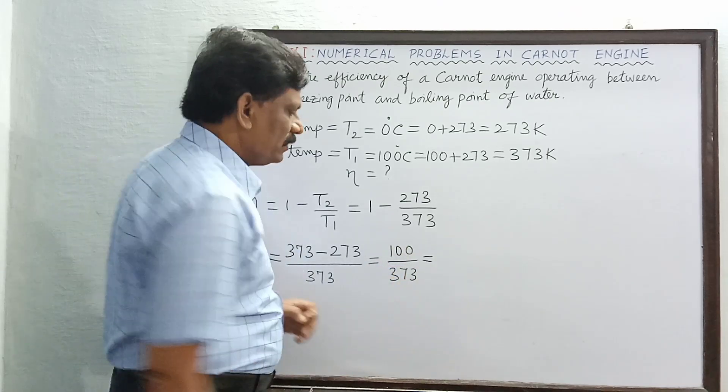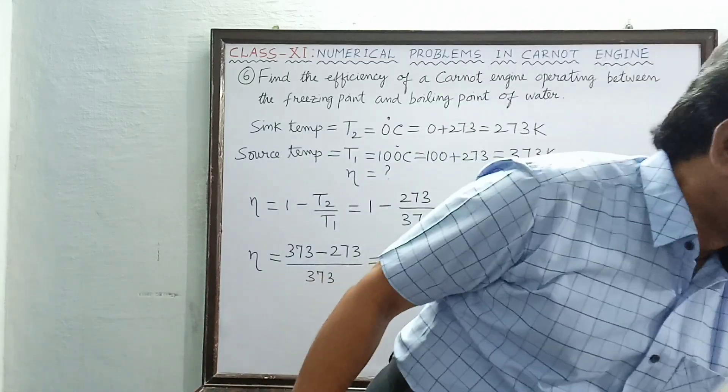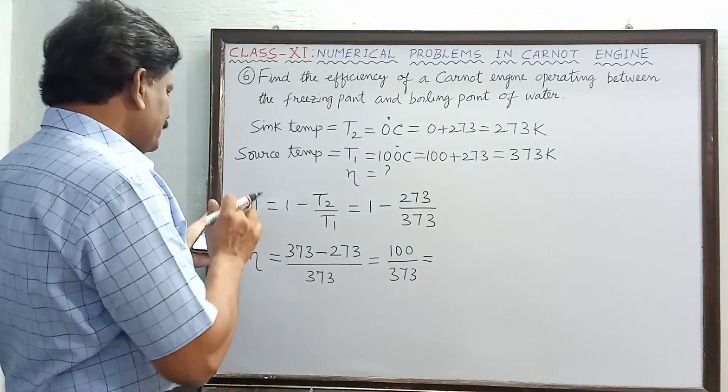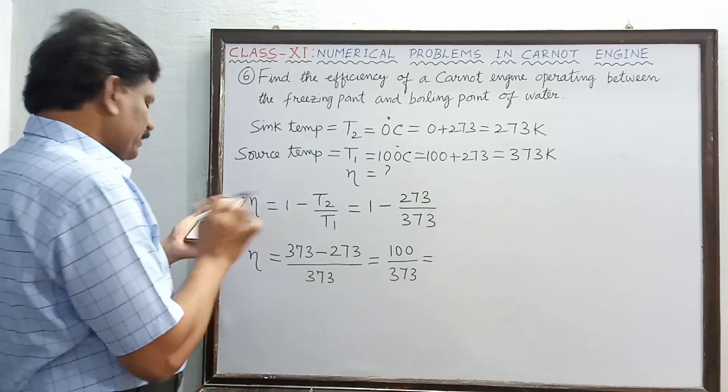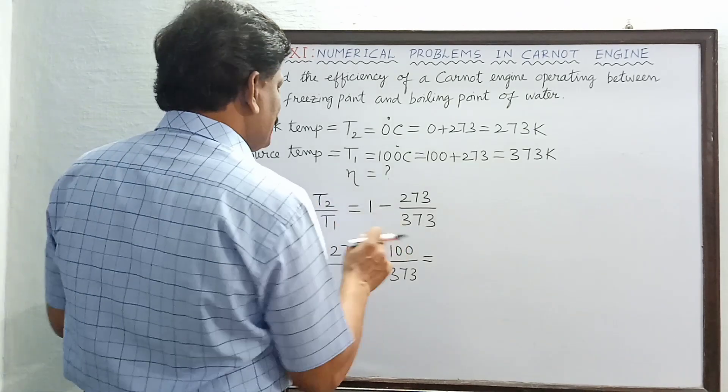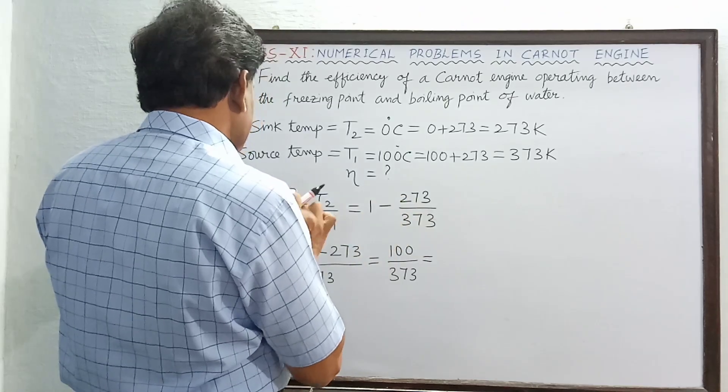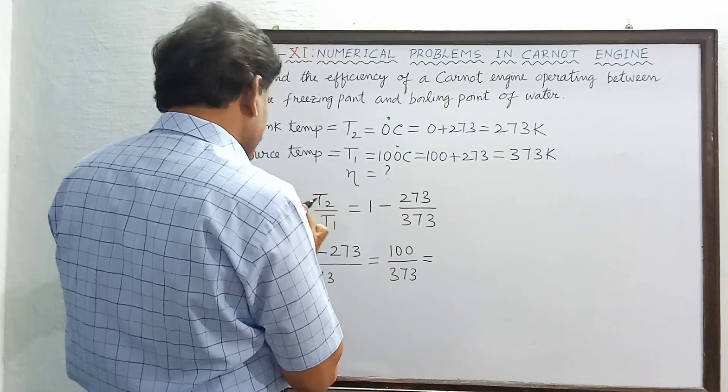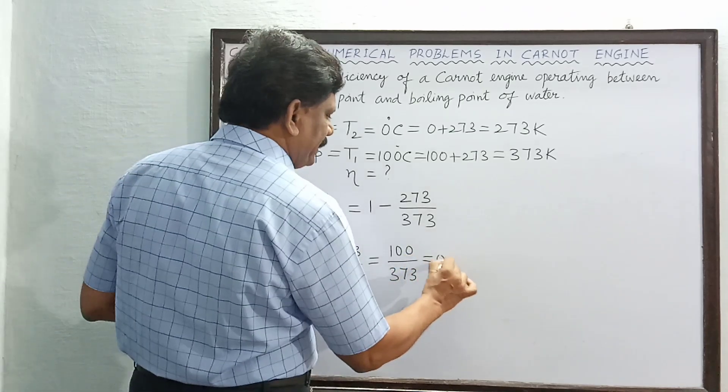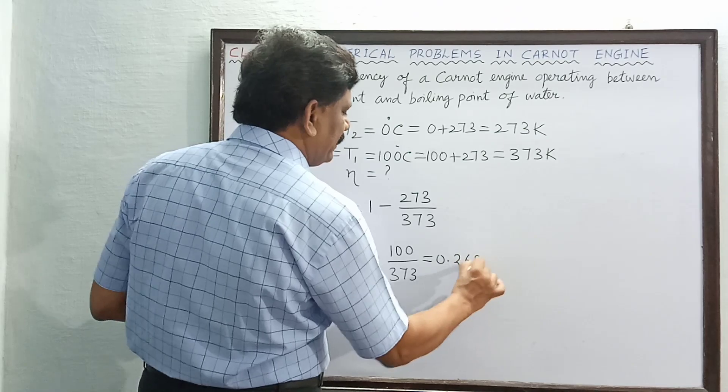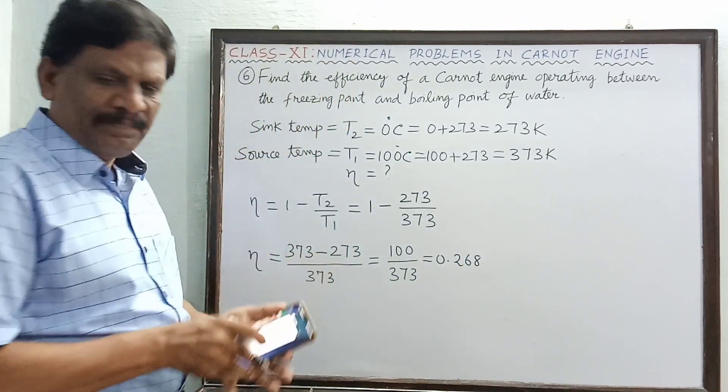So we have to use the calculator. Okay, so 100 divided by 373, it will come in decimals, a number less than 1. So this is 100 divided by 373 is equal to 0.268.